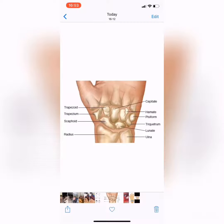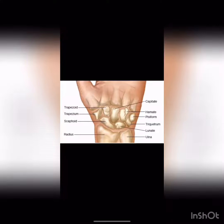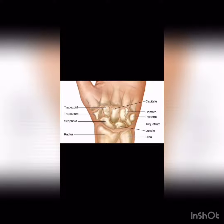Always remember that naming and numbering of carpal bones starts from the side of the thumb. There is also a famous mnemonic to remember all eight names: 'She Looks Too Pretty, Try To Catch Her.' If you take the very first letter of each word in this sentence, you will get the names of all eight carpal bones.